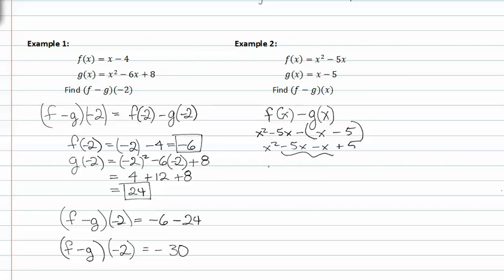Adding like terms, we get x squared minus six x plus five.